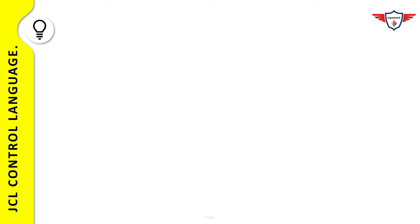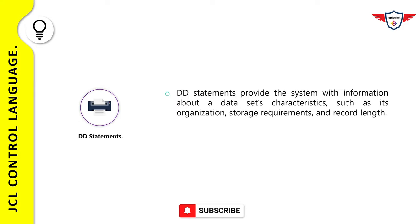DD statements, or data definition statements, define the datasets used in your programs. They define the characteristics of a dataset — including record length, storage requirement, and organization. The syntax of a DD statement is complex because parameters can be coded in various combinations depending on whether the dataset is new or old, temporary or permanent, or cataloged or uncataloged.